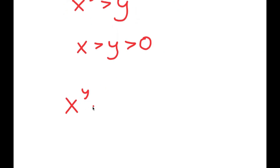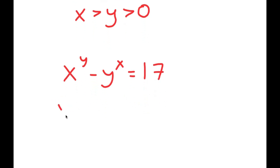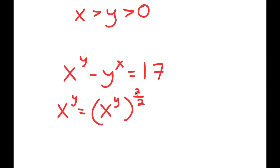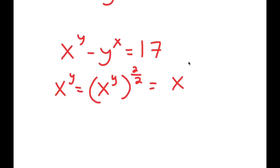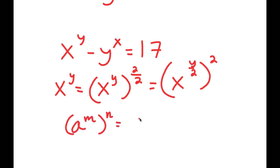I'm going to rewrite my equation: x to the power of y minus y to the power of x is equal to 17. And x to the power of y, I can rewrite this as x to the power of y to the power of 2 over 2, because 2 over 2 is the same thing as 1. This I can rewrite as x to the power of y over 2 to the power of 2, because if I have something in the form a to the power of m to the power of n, this is the same thing as a to the power of m times n.